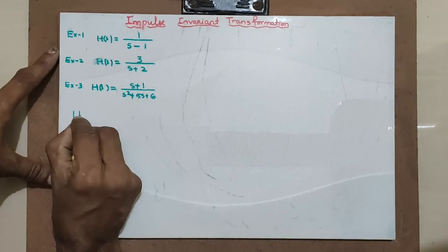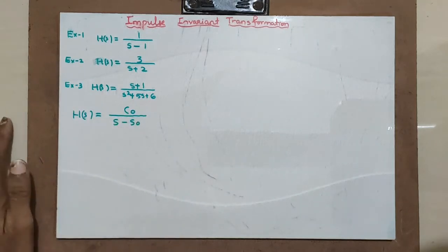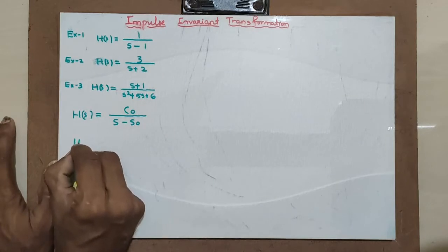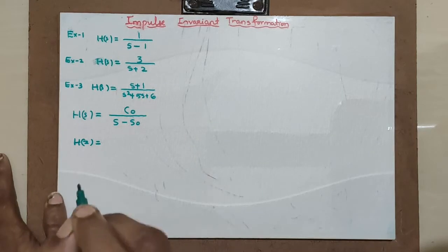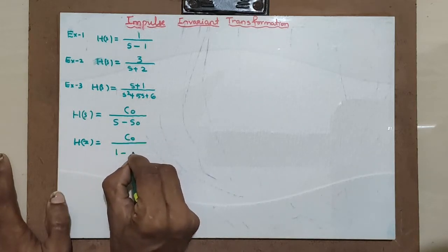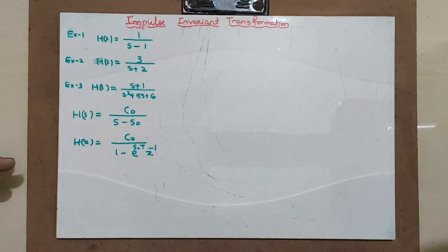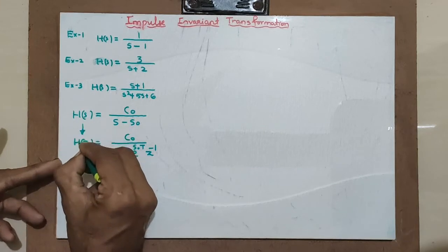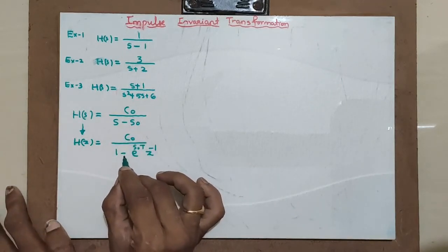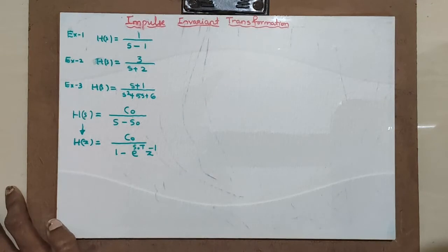We know that suppose there is H(s) given by c₀ divided by (s minus s₀), where s₀ is a constant or pole position. The corresponding H(z) with impulse invariant transformation will be c₀ divided by 1 minus e raised to s₀T times z raised to minus 1. The constant c₀ remains the same, and (s minus s₀) is transformed into 1 minus e raised to s₀T, where T is the sampling period.